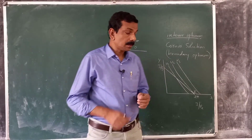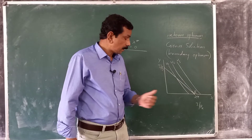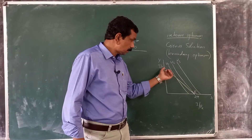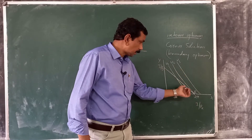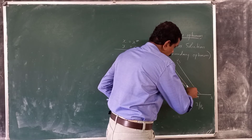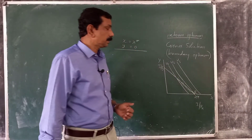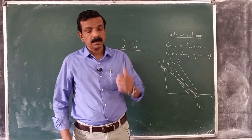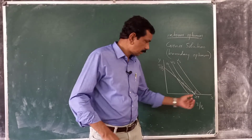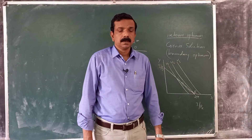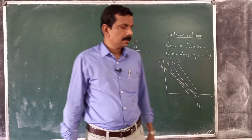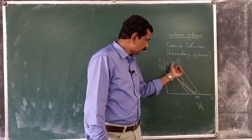If you consider a point on the budget line where the consumer purchases both commodities, as you can see, it represents a lower level of utility. Also note that at point E, utility is maximum, but it is not defined by tangency between the indifference curve and the budget line.